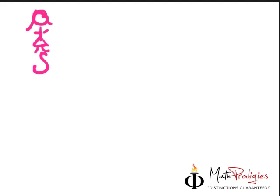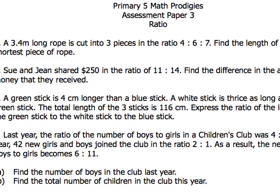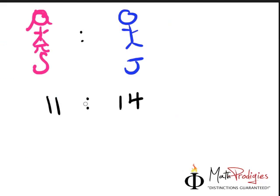And then this is Jean. The ratio they have here is 11 to... 11 to 15, no, 14. Let's check again - 11 to 14. Yep, correct. And the amount they shared together is $250.